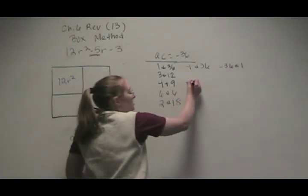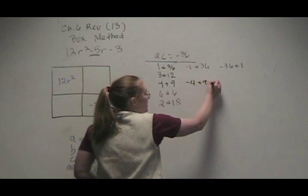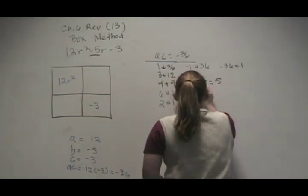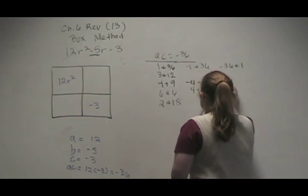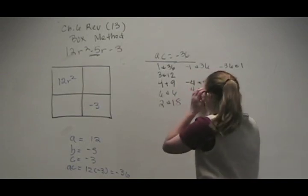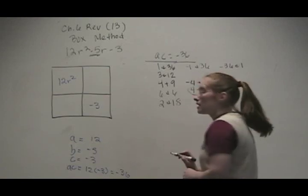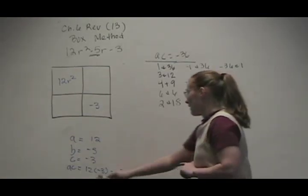So if we look here, negative 4 plus 9 would give us a positive 5. Nope, we don't like that one. But what about 4 plus negative 9? Negative 5. So this is our middle term. So we're going to write them in here.